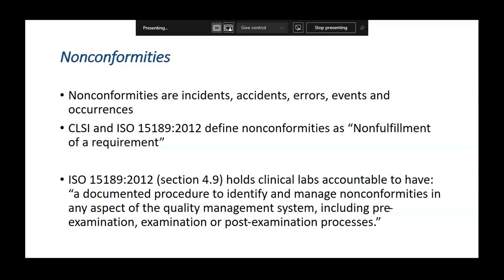As per clause 4.9 of ISO 15189:2012, there must be a documented procedure to identify and manage these non-conformances in any aspect of the quality management system — whether in the pre-analytical, analytical, or post-analytical phase. Clause 4.9 is where RCA is required for any non-conformance or deviation. Clause 4.10 says corrective action must be implemented.